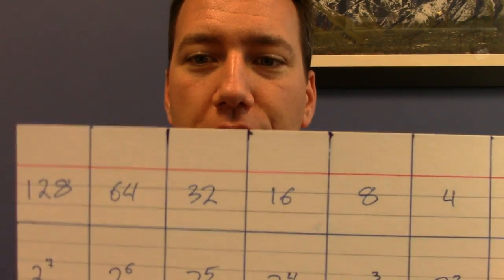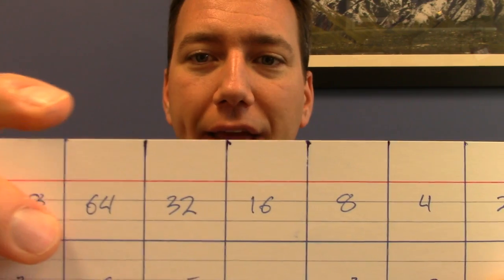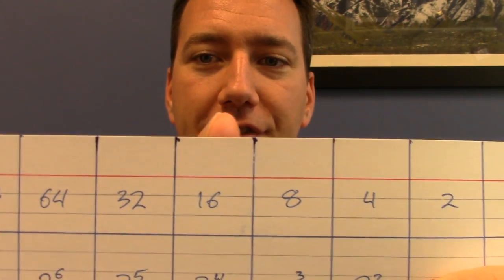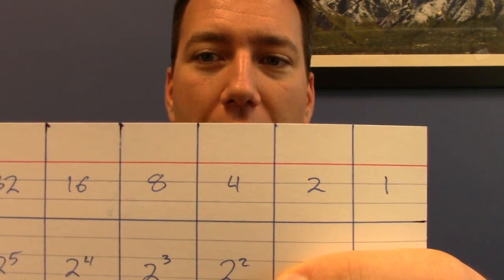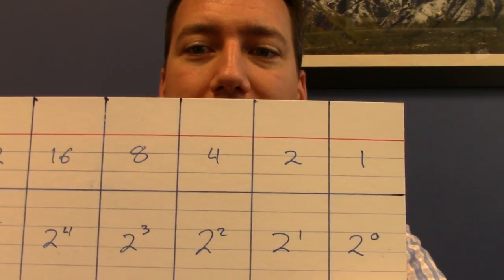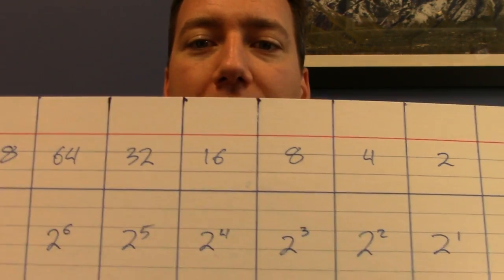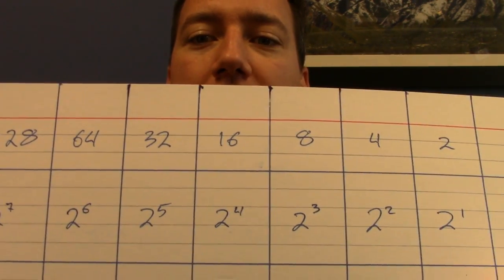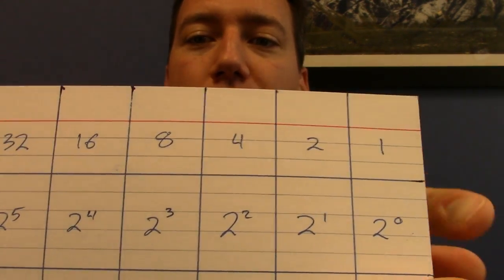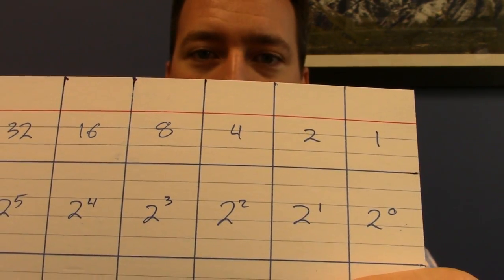Now for our next step, I'd like you to label the top row of the card with the powers of 2. So on the very left of the card, 128, then 64, 32, 16, 8, 4, 2, and 1. And in the row beneath that, we'll write it in exponent notation. So I've got 2 to the 7, 2 to the 6, 5, 4, 3, 2, 1, followed by 2 to the 0 on the far right.